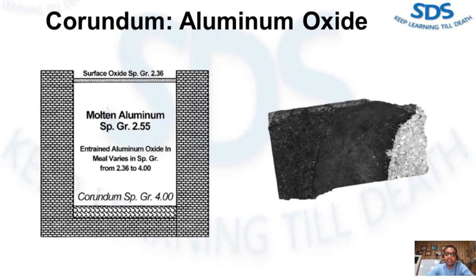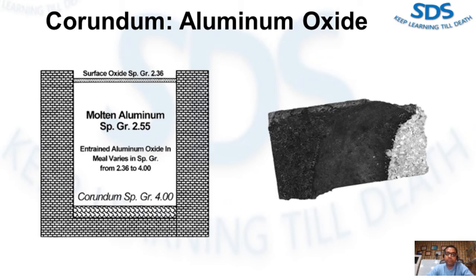Bath stirring, pumping, or agitation, plus tapping and pouring operations, can re-entrain corundum particles into the metal stream and result in inclusions in the die cast product. Corundum growth occurs on aluminum refractories at high temperature and high oxidation potential, when refractory brick or castable is porous, or when free silica is present. Electric furnaces are often prone to corundum buildup. This image demonstrates the conversion of a low-cost brick, which is high in free silica, into the alpha phase corundum product on the hot face.